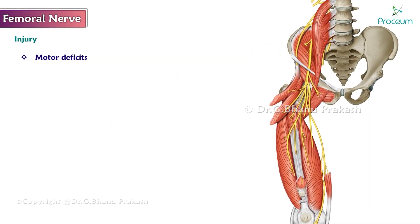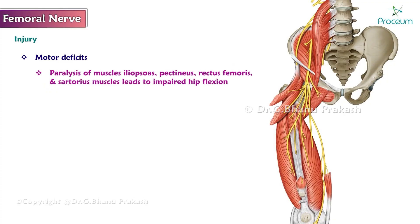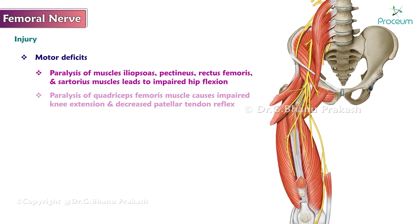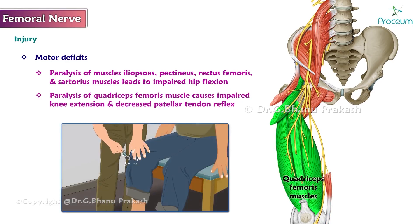Motor deficits are seen in the form of paralysis of the muscles: iliopsoas, pectineus, rectus femoris, and sartorius muscles lead to impaired hip flexion. Paralysis of the quadriceps femoris muscle causes impaired knee extension and decreased patellar tendon reflex.